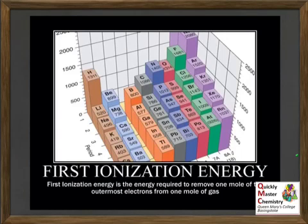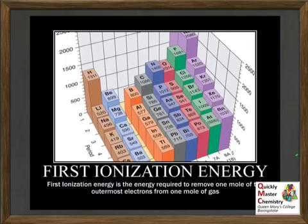This 3D representation of first ionisation enthalpy within the periodic table neatly reinforces both trends. Looking down each of the groups, you can see the first ionisation enthalpy decreasing, and moving left to right across each of the periods, you can see the overall increase in first ionisation enthalpy within the period.